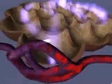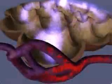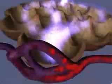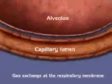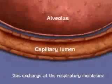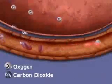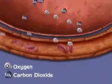Now let's zoom into a higher magnification view of gas exchange at the respiratory membrane. Red blood cells in the capillary adjacent to the alveolus release carbon dioxide and bind oxygen.